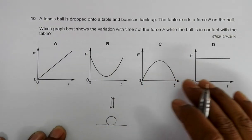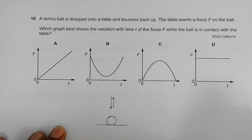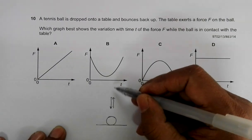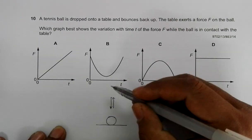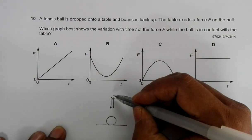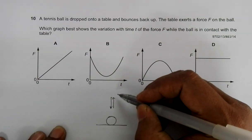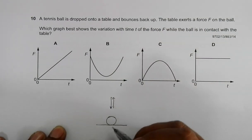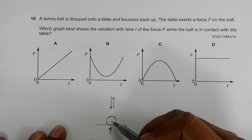We have to find the most appropriate graph. Let's first realize that when the ball just touches the ground, until it was in air, the only force on it was the force of gravity. When it is on the ground, the surface starts to apply force on the ball. So initially it is zero.